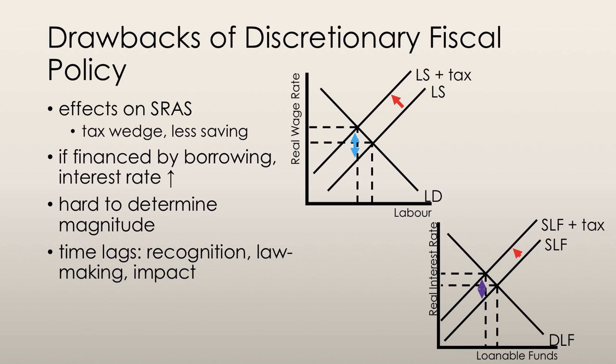Lawmaking lag is the time it takes a government to pass laws. The problem here is that, because democratic governments must put these policies to a vote, by the time any bill gets passed, the state of the economy might have completely changed and a completely different form of stimulus might be needed.